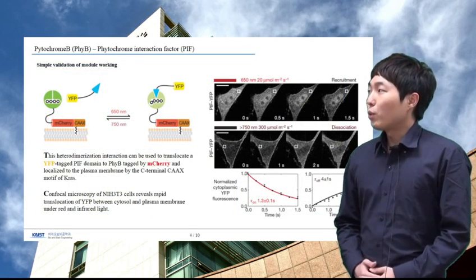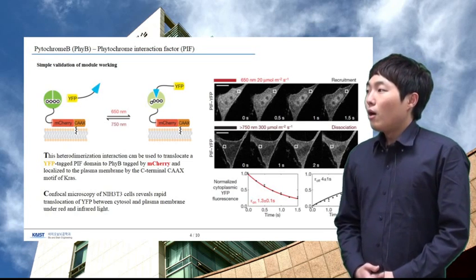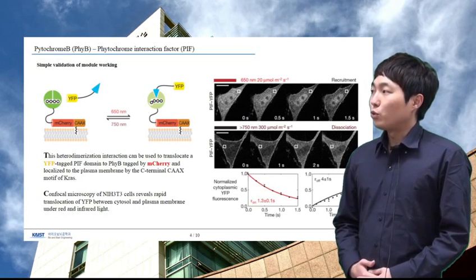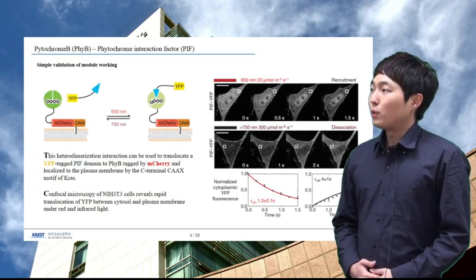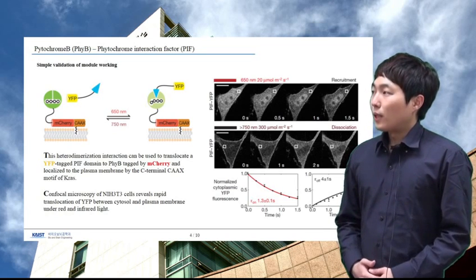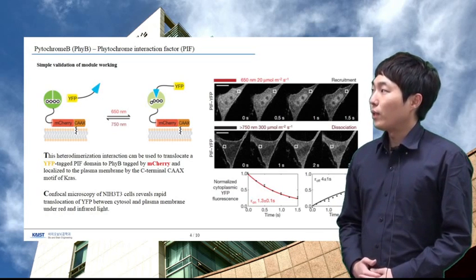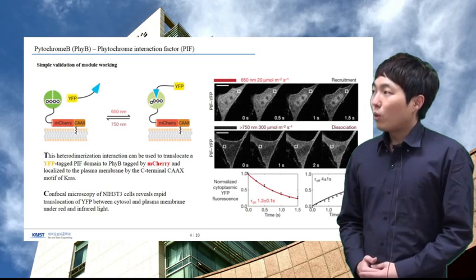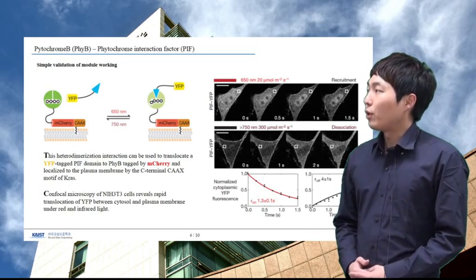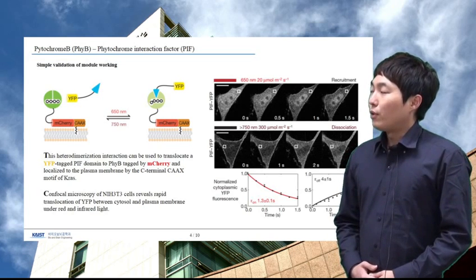Using light-inducible protein-protein interaction property, researchers optimized and constructed various systems. They observed photoreversible translocation of protein to the plasma membrane. They used YFP-tagged PIF domain in cytosol and Phytochrome-B tagged by mCherry on plasma membrane, then observed the binding ability according to red light illumination or infrared light illumination.